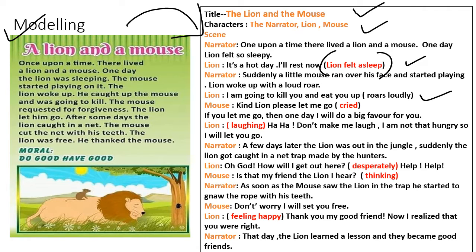Narrator: 'A few days later, the lion was out in the jungle. Suddenly, the lion was caught in a net trap made by the hunters.' Lion — desperately: 'Oh God, how will I get out of here? Help, help!' Mouse: 'Is that my friend, the lion I hear?' — thinking. Narrator: 'As soon as the mouse saw the lion in the trap, he started to gnaw the rope with his teeth.' Mouse: 'Don't worry, I'll set you free.' Lion — feeling happy: 'Thank you, my good friend. Now I realize that you were right.' Narrator: 'That day, the lion learned a lesson and they became good friends.' See how it is prepared in the form of a play script from the given story.